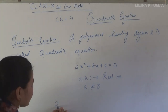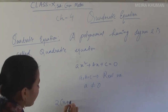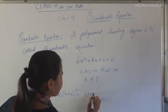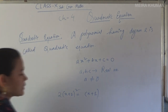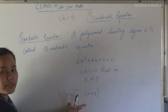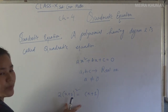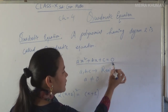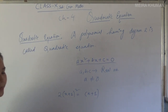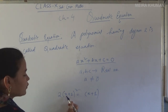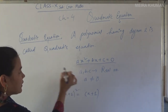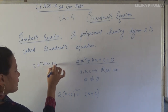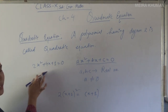Suppose you have an equation like 2(x+1)² = x+1. Can you say whether this type of equation is a quadratic equation or not? The general form is ax² + bx + c = 0. Let's expand: 2(x+1)² gives 2x² + 4x + 1 = 0. This is your quadratic equation.